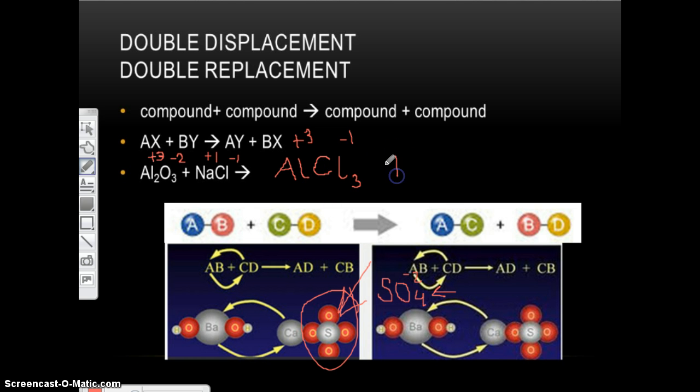So AlCl3 plus, and now I have O3, but again I don't bring the subscript over. So I have O and I have Na. Which one do I have to write first? Na, because it's positive. I have to write the positive one first. So Na plus 1, O minus 2. So that 2 goes down here, that 1 goes down there. Again, there are no subscripts over here. Na has a subscript over here, that's okay. There were three oxygens over here, there's only one over here, that's okay.